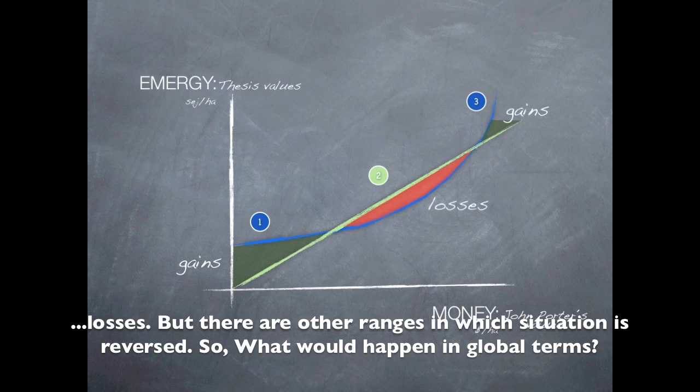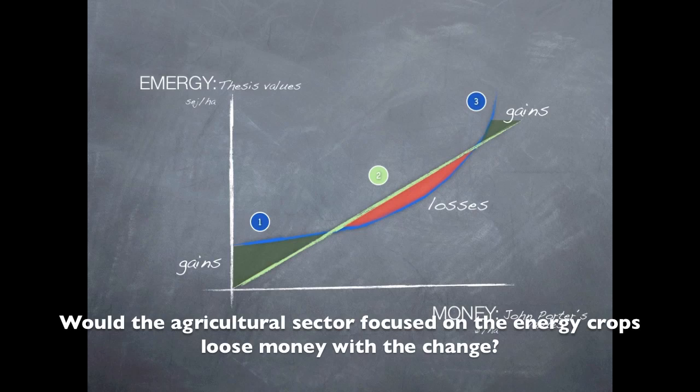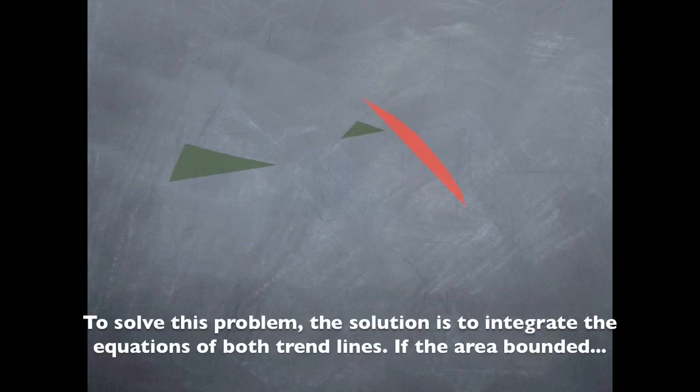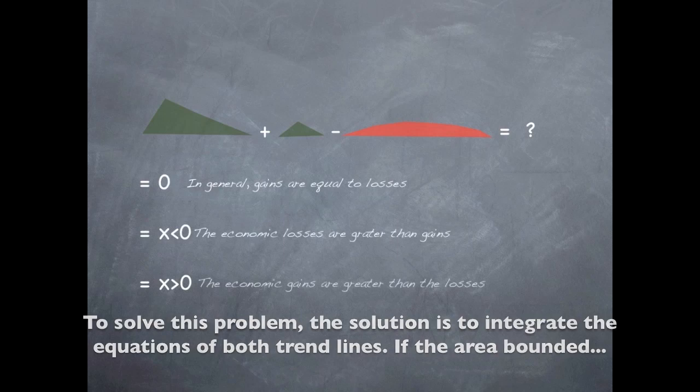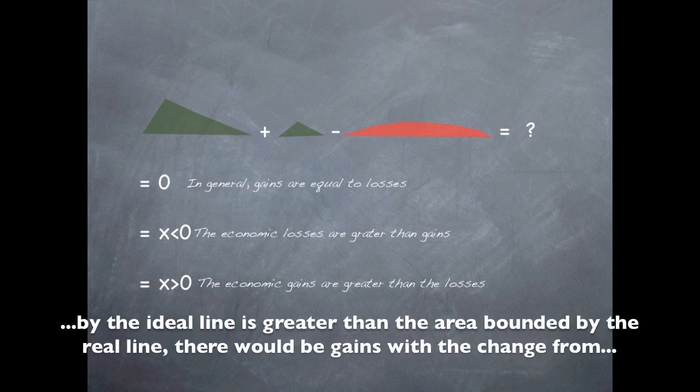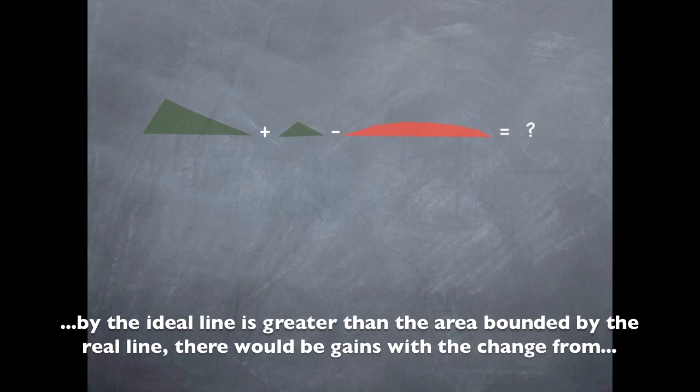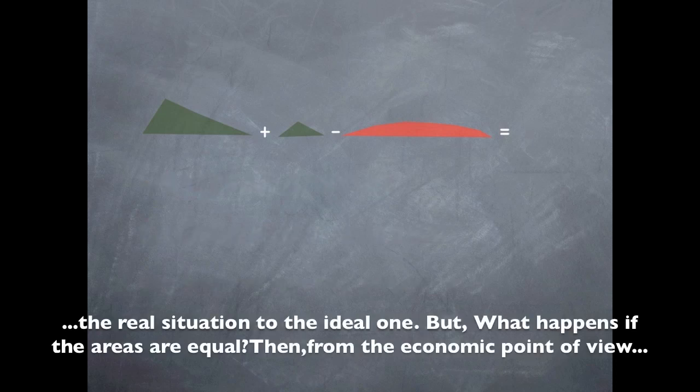So, what would happen in global terms? Would the agricultural sector focus on energy crops lose money with the change? To solve this problem, the solution is to integrate the equations of both trendlines. If the area bonded by the ideal line is greater than the area bonded by the real line, there would be gains with the change from the real situation to the ideal one.